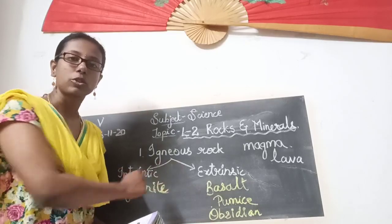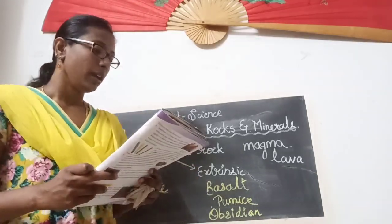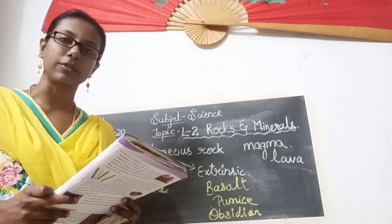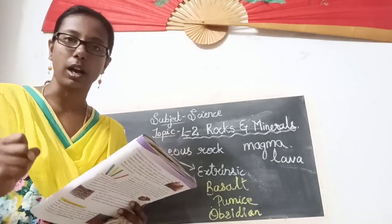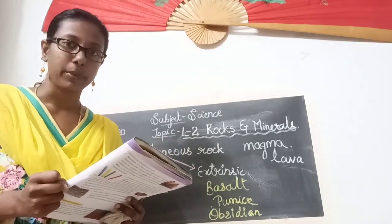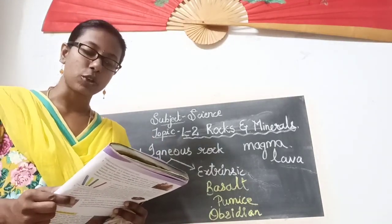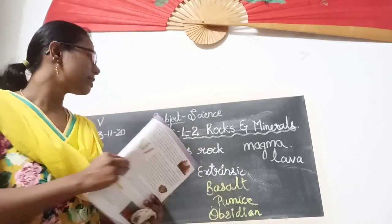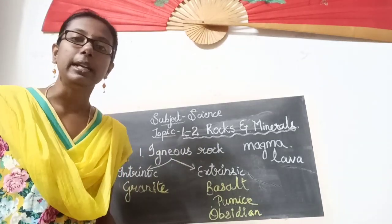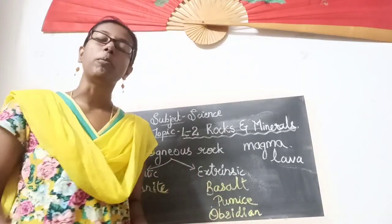Coming to the next rock — basalt. It is an extrinsic igneous rock. Basalt is an igneous rock formed when lava solidifies on the surface of the earth. It is very hard, like granite, but it is black colored, while granite is gray to pink. Basalt is used for making statues and grinding stones — the stone in grinding machines is made of basalt because of its strong nature.